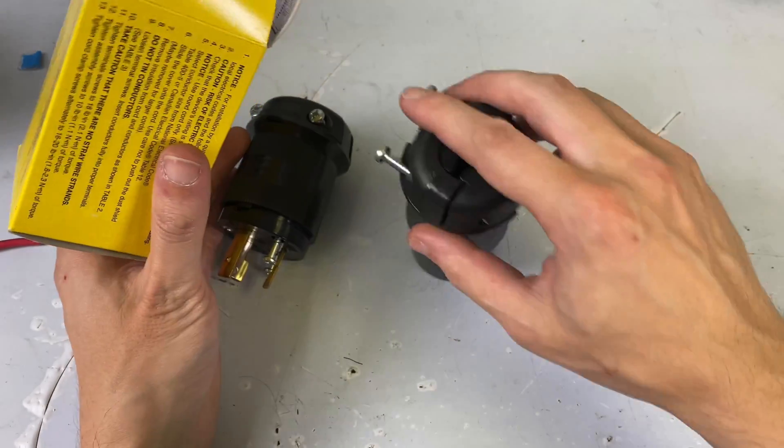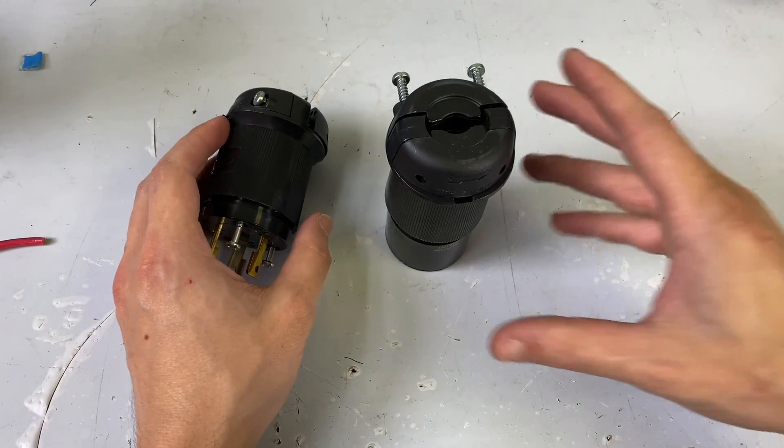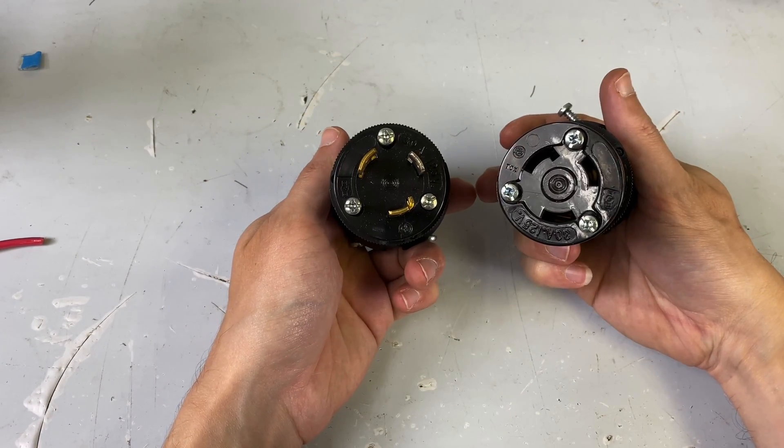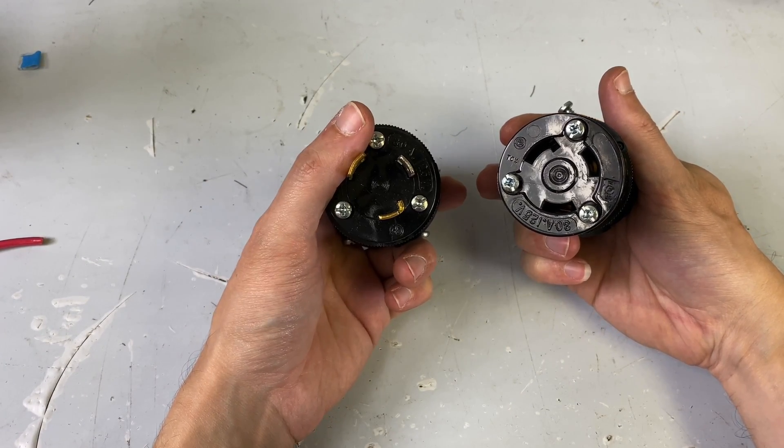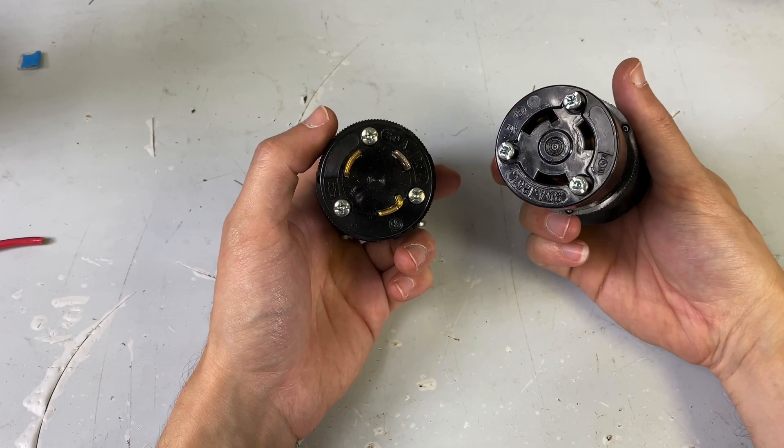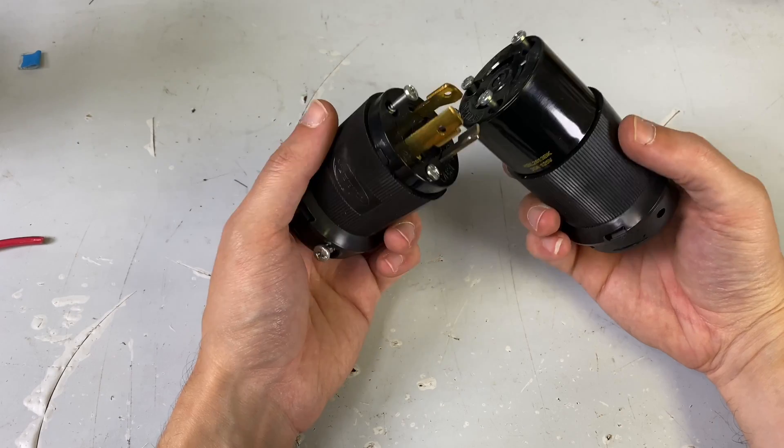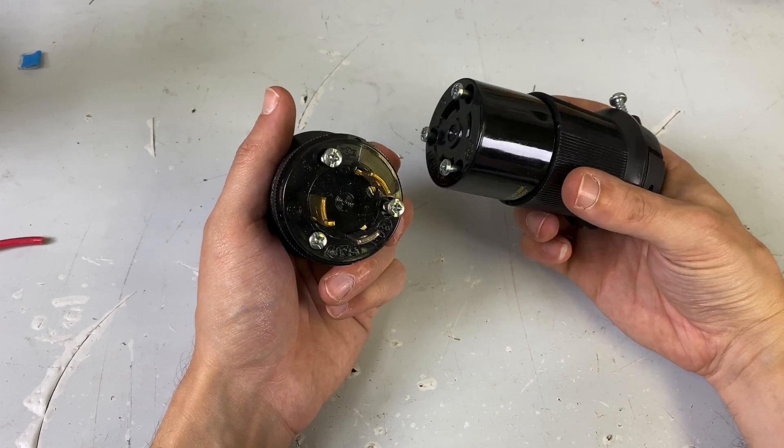So I've got two L530 connectors. For those of you who are not familiar with NEMA twist locks, this is what's called an L530 connector. This is 30 amps, 120 volts. And basically it locks together and it is a twist lock.